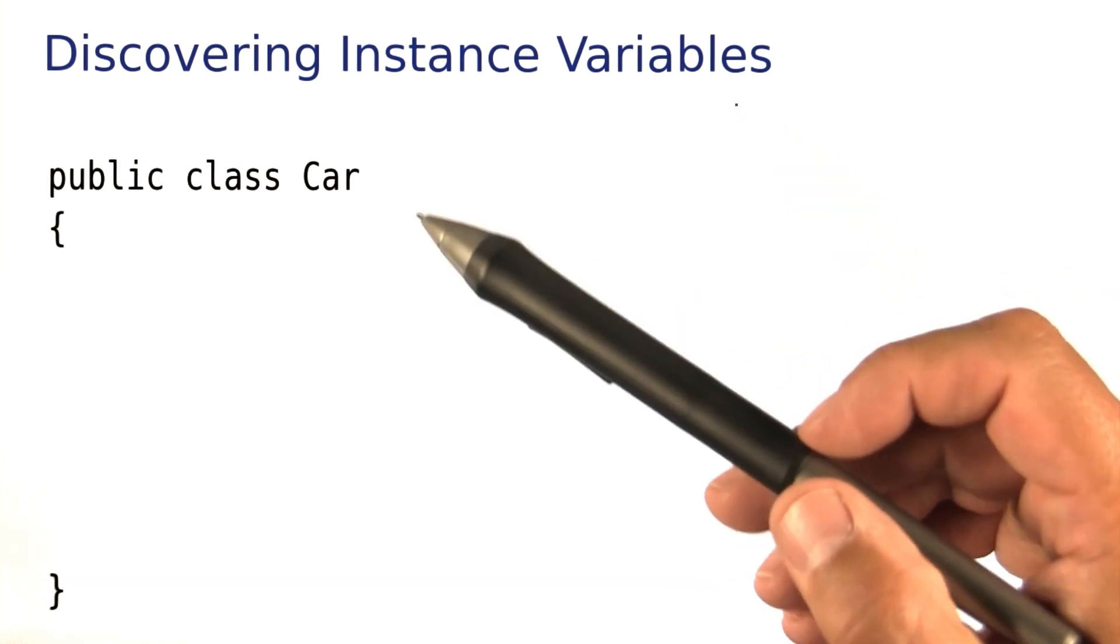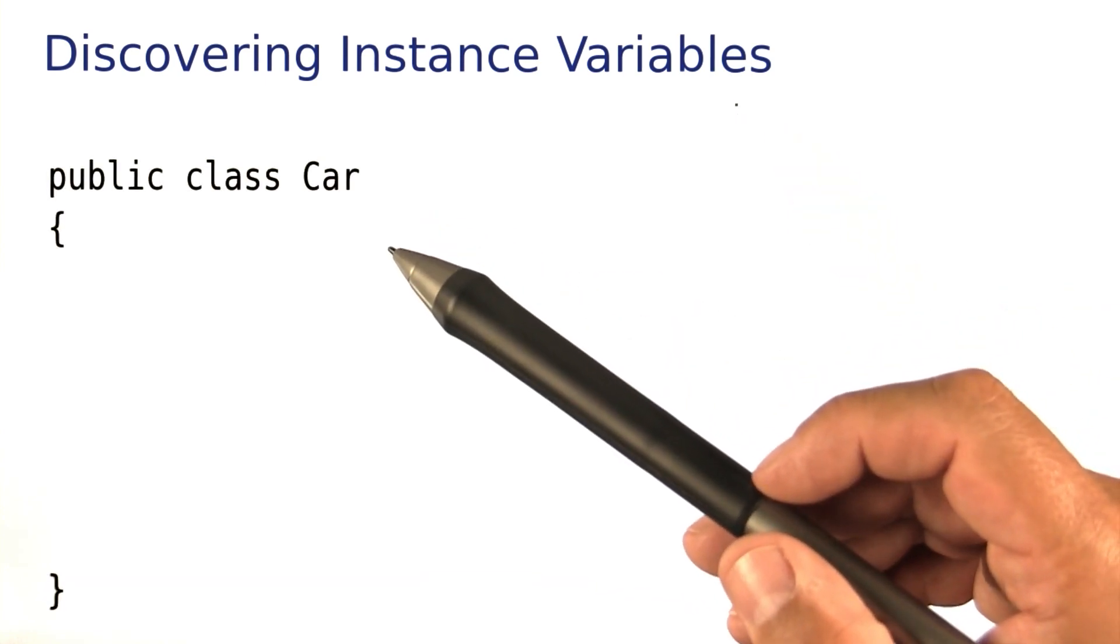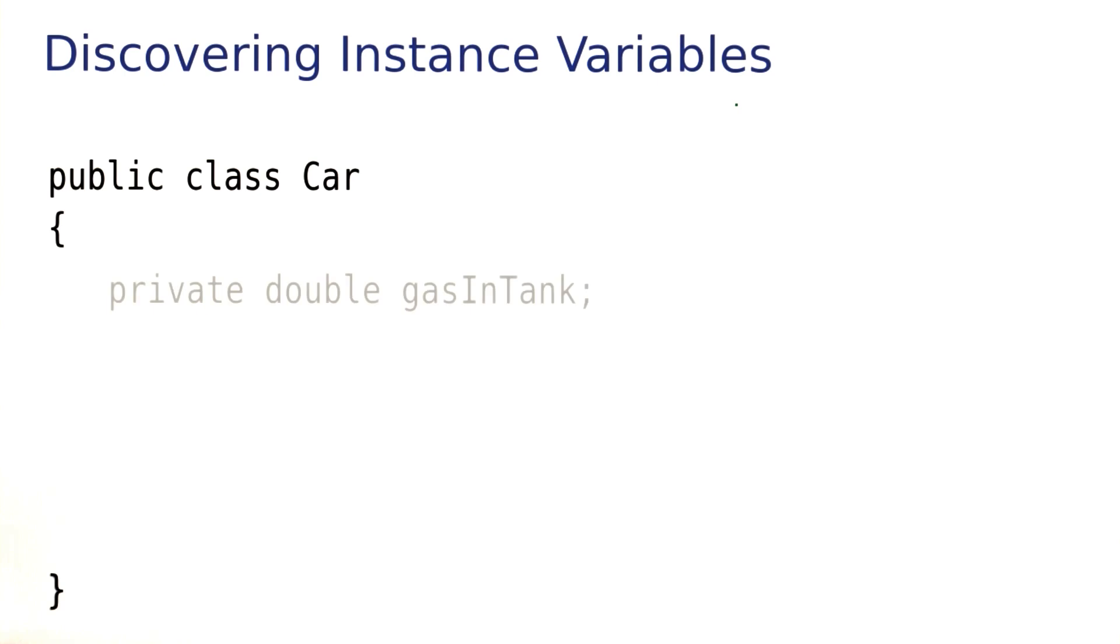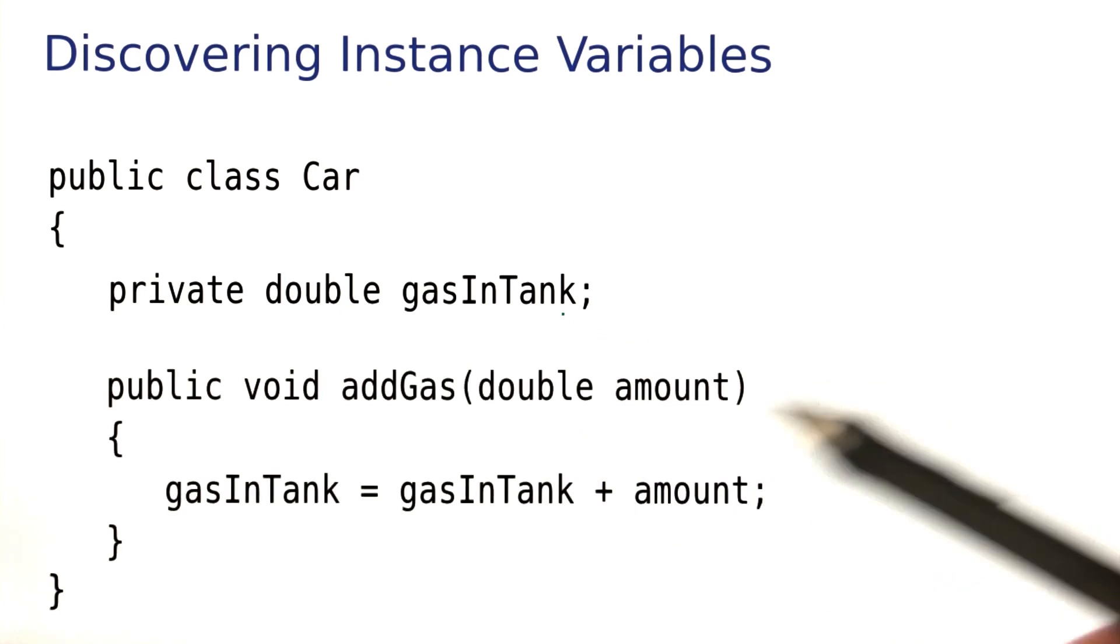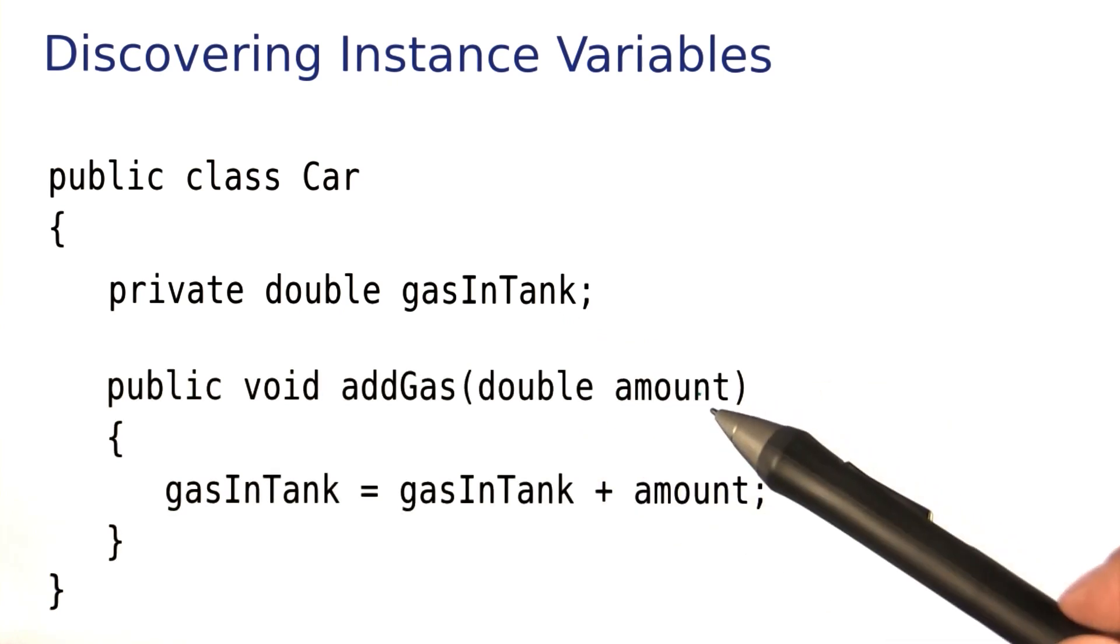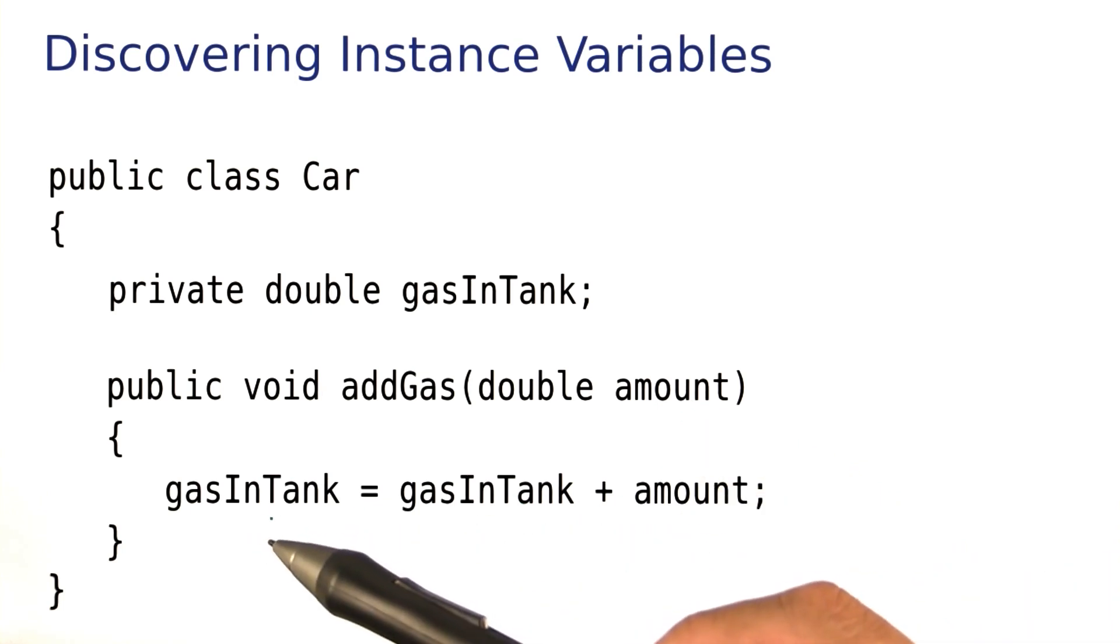To see how those rules of thumb work, let's have another look at the Car class from lesson three. That class had an instance variable to hold the amount of gas in the tank. There was a method to add gas, where the parameter value would be added to the gasInTank.